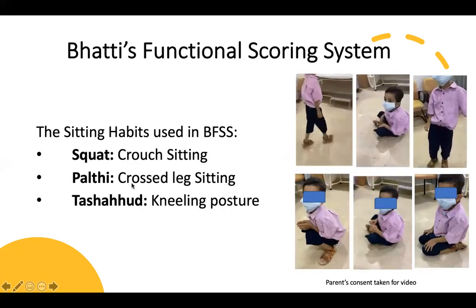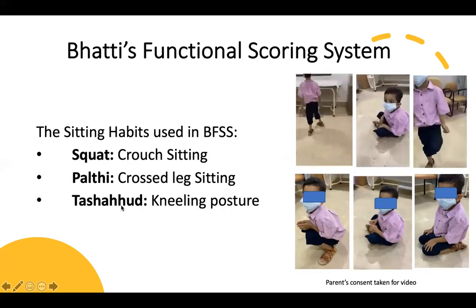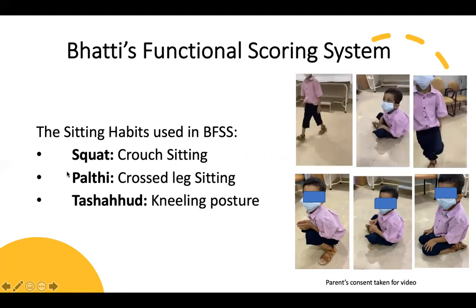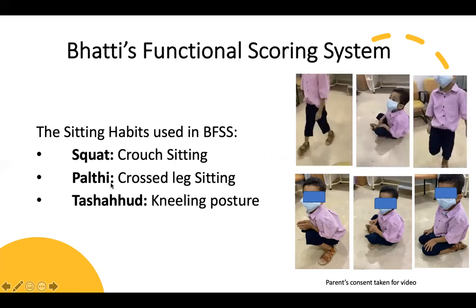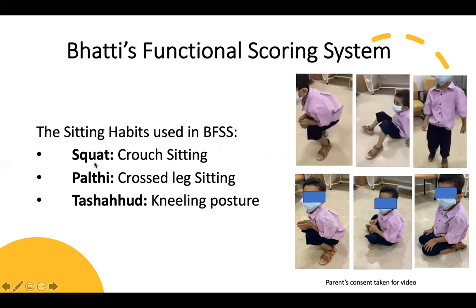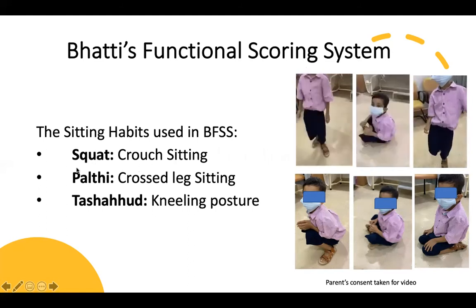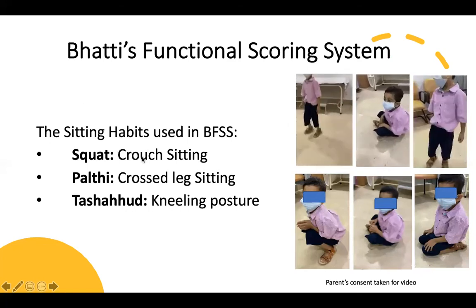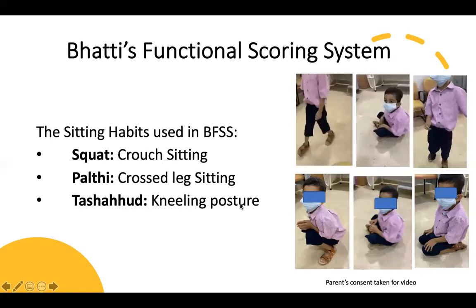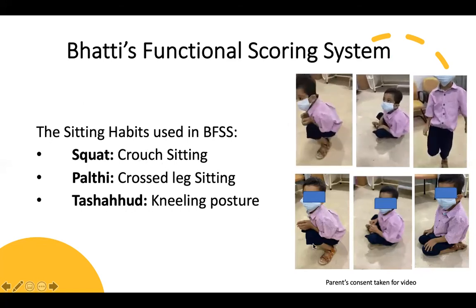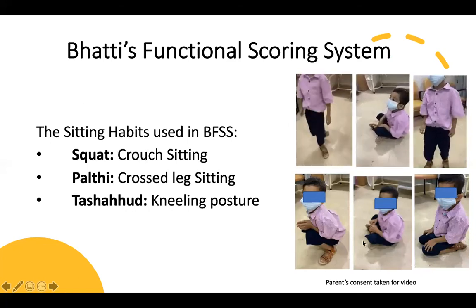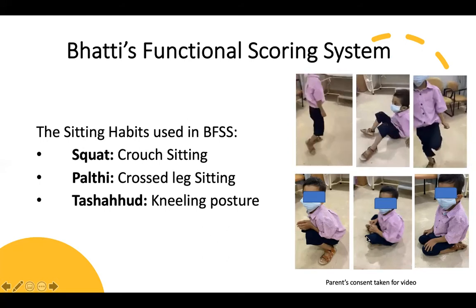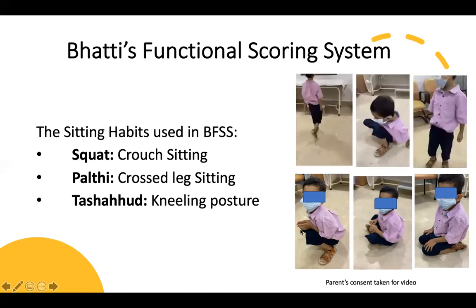The three positions used to establish the Bhatti functional scoring system are: a squat, a palti, and a tashud. A squat is crouched sitting, palti is cross-legged sitting, and tashud is a kneeling posture.